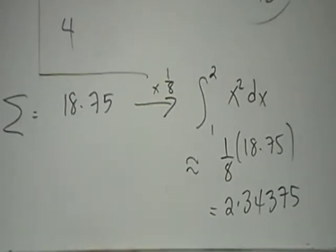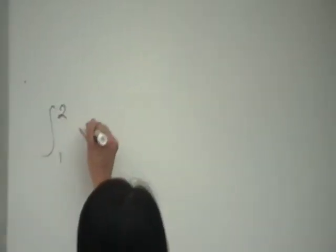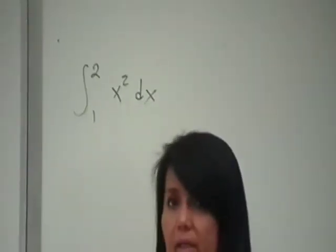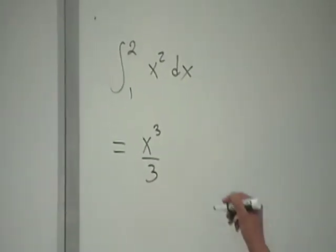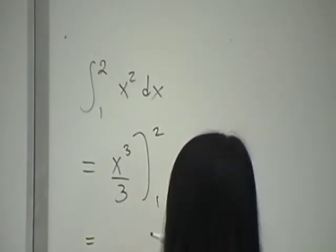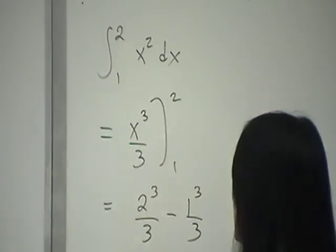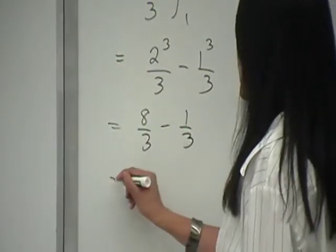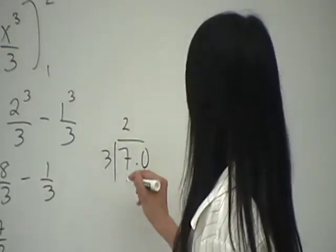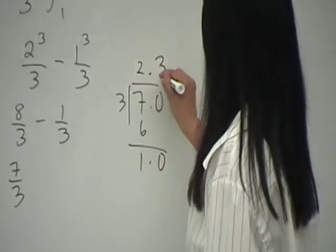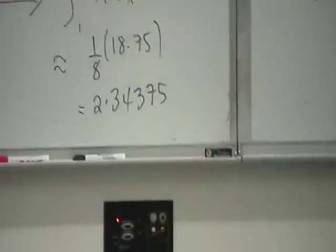That's how you do the trapezoidal rule — a simple example. To see how close the approximation is, we can get the exact answer. Integrating x² gives x³/3, evaluated from 1 to 2: (8/3) − (1/3) = 7/3 ≈ 2.333... You can see how close 2.34375 is to the exact value of 7/3.